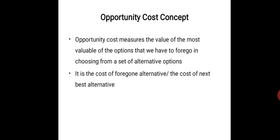Opportunity cost is the cost of a foregone alternative, or the cost of the next best alternative. It is also called alternative cost or transfer cost. This cost arises only when a particular resource has alternative uses — for example, when you are dealing with a commodity or product that can be used for more than one purpose.